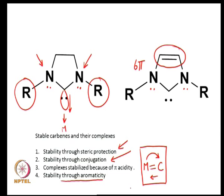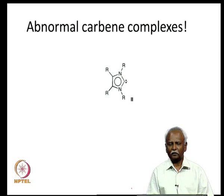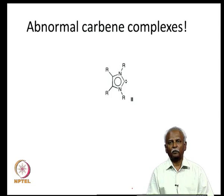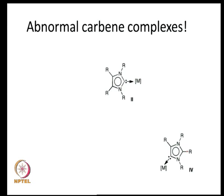These are N-heterocyclic carbenes and they occupy a special place in the literature. Today I want to introduce a related system called an abnormal carbene complex. There is nothing really abnormal about these carbene complexes, but we will explain how they are slightly different from the N-heterocyclic carbenes. Just imagine that instead of the lone pair on the carbene carbon being situated between the two nitrogens, it is on a second carbon which is not the one between the two nitrogens.